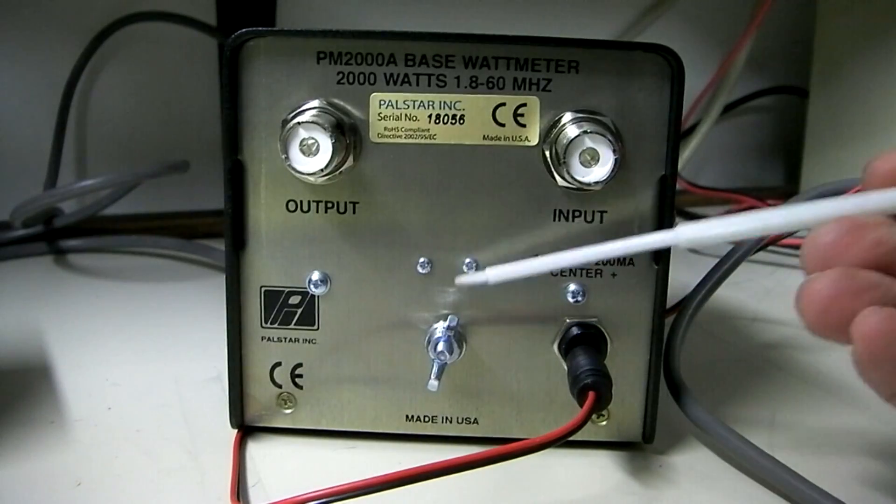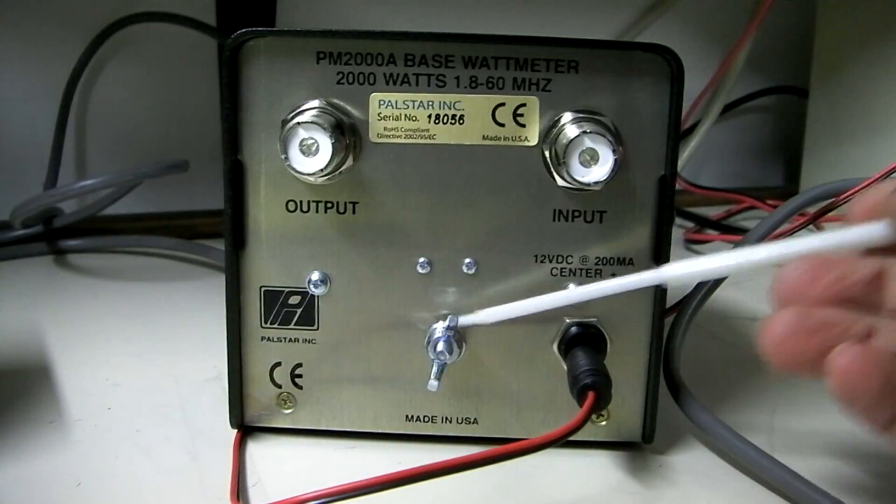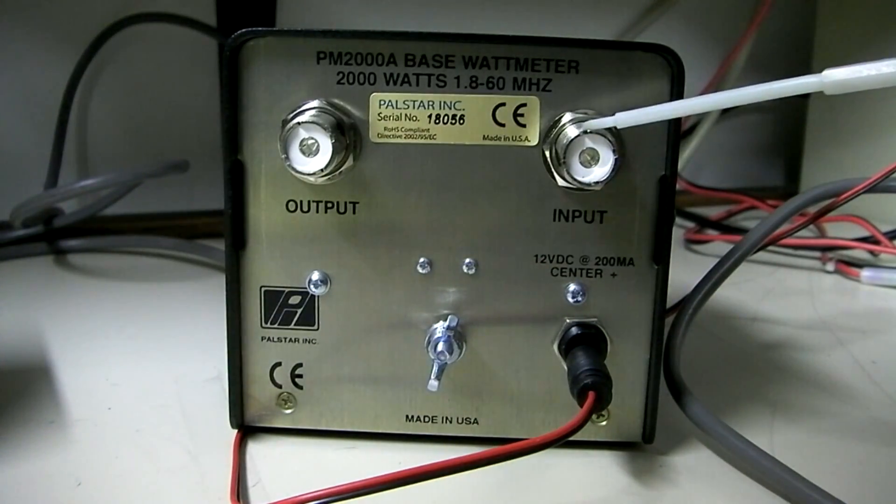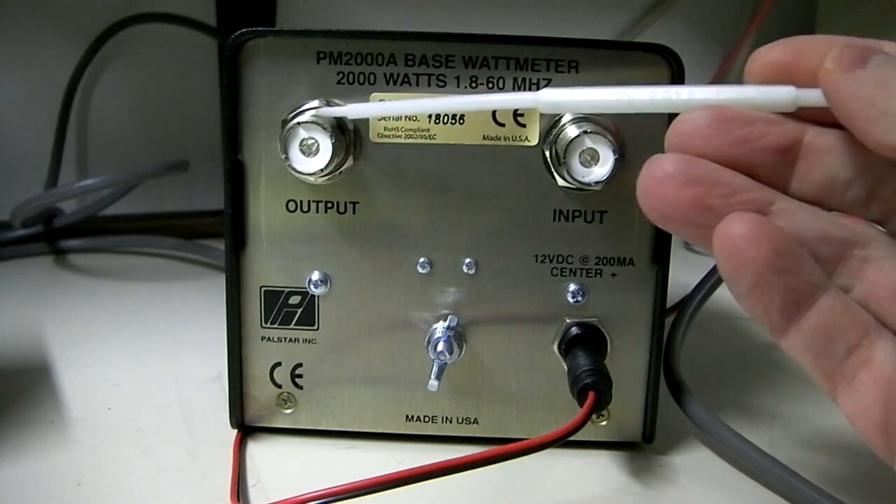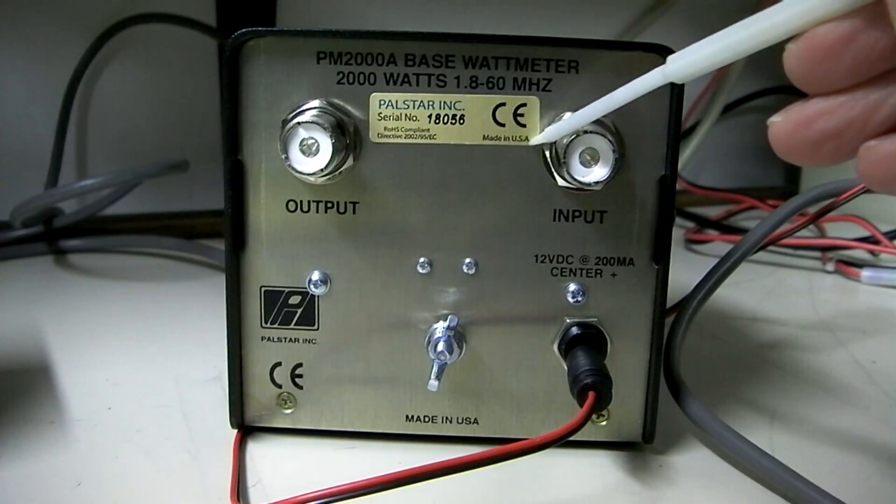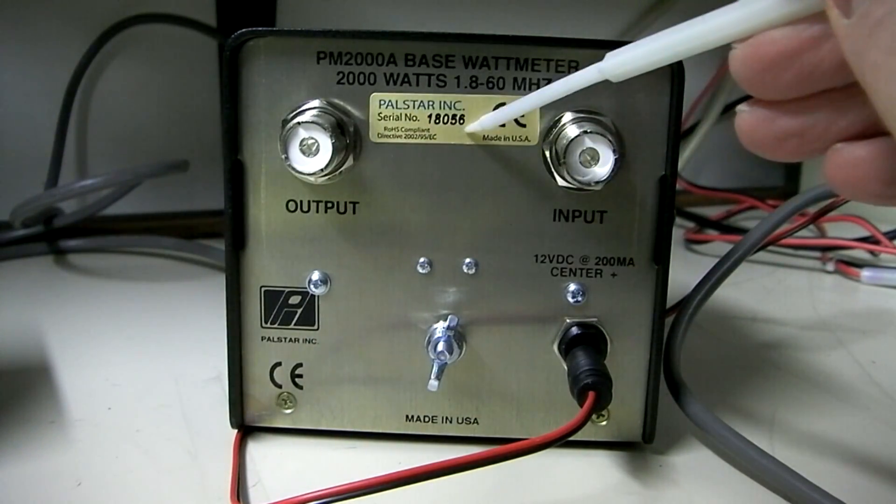All right, at the back of the meter, you see it has a ground screw here. It's got an input, that's where you plug in for your radio. Output, coming out of here. Made in the USA. It's got a serial number on it.